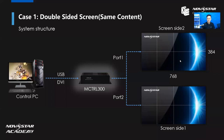This is the system structure for the double-sided screen. Because the screen is not too big, I'm using one Controller 300. Port one drives screen side two, and port two drives screen side one. Each screen has eight receiving cards. We use a control PC, connect DVI to the Controller 300 — the DVI is the video source from the PC to the Controller 300. Then we connect with a USB cable for the Controller 300, and do some configuration in NovaLCT. That's a simple structure to set up double-sided screens.